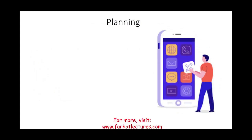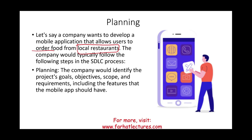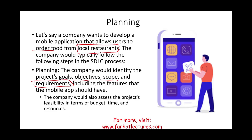Starting with the planning phase, I'll be using an example of a mobile application that allows users to order food from local restaurants. In the planning stage, we identify the project's goal — to build a mobile app that allows customers to order food from local restaurants. We set the objective, the scope, and requirements. The company also assesses project feasibility: do we have enough budget, time, resources, and staff to develop this?